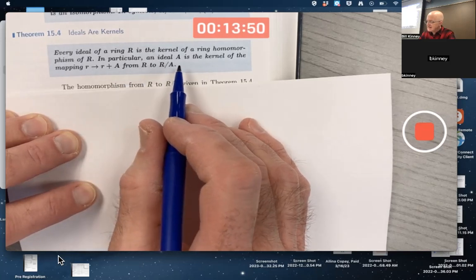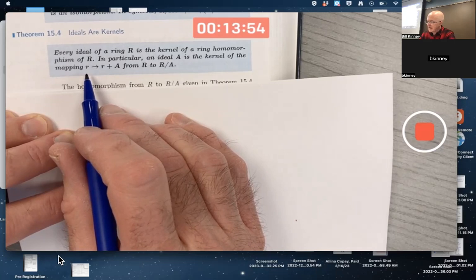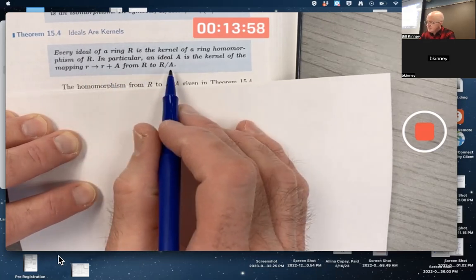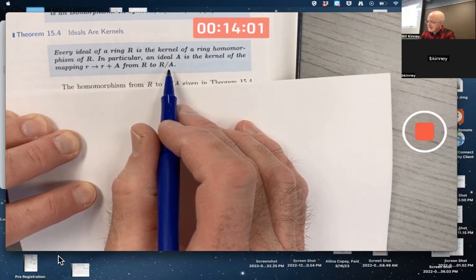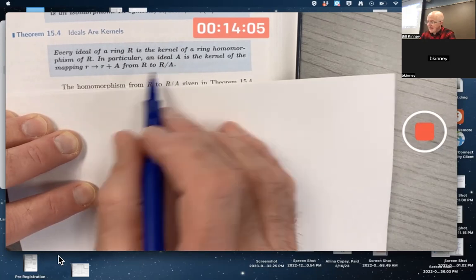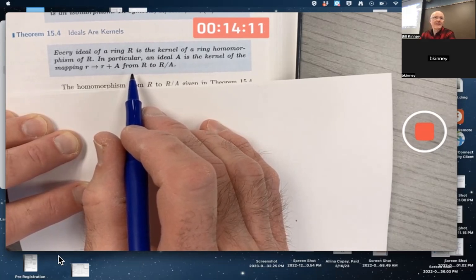In particular, an ideal A is the kernel of the mapping that sends your arbitrary ring element of capital R to the left coset R plus A in the factor group R mod A. The main thing is verifying that that mapping is a ring homomorphism and that it indeed does have a kernel equal to A. That's the goal here.